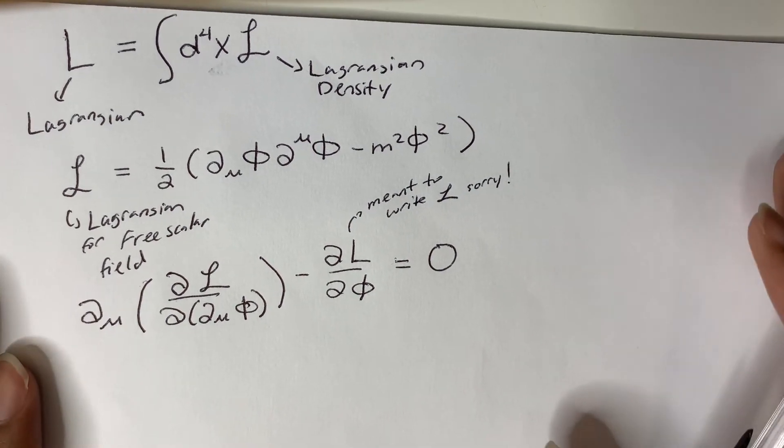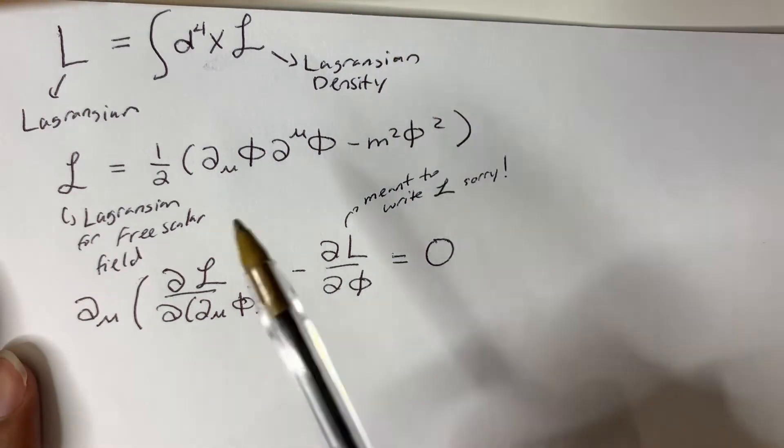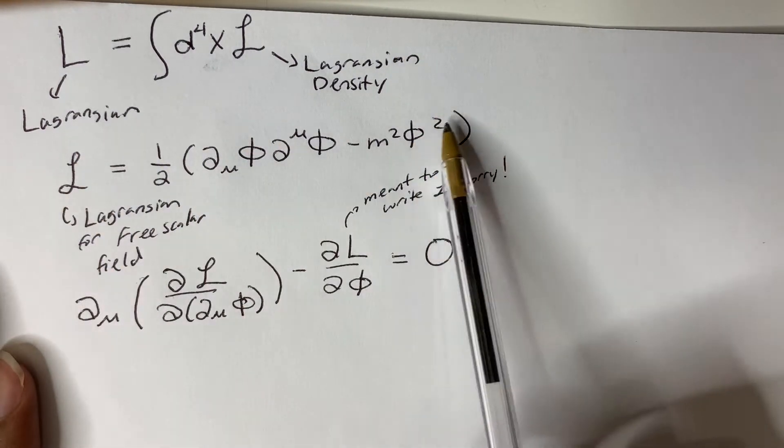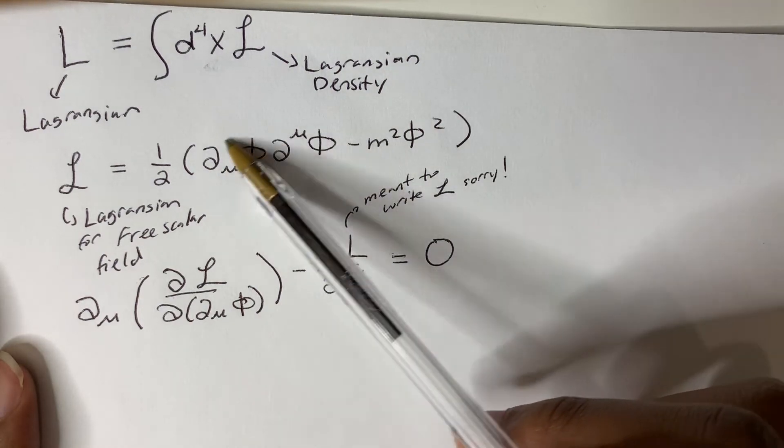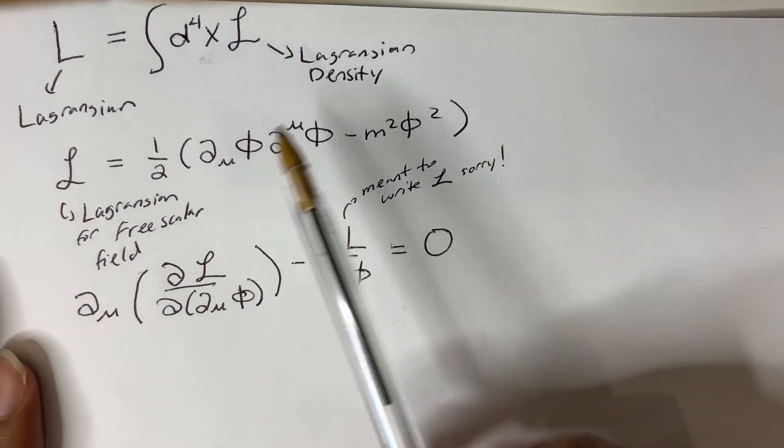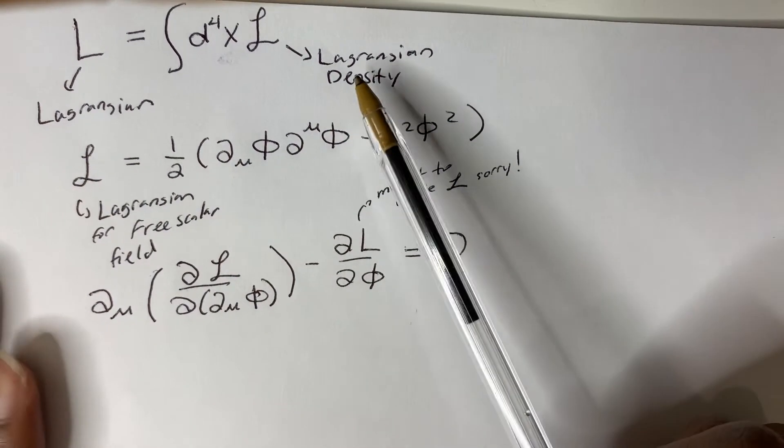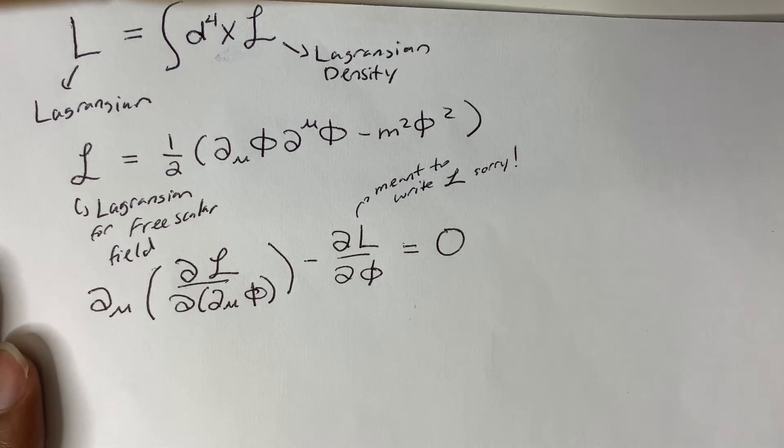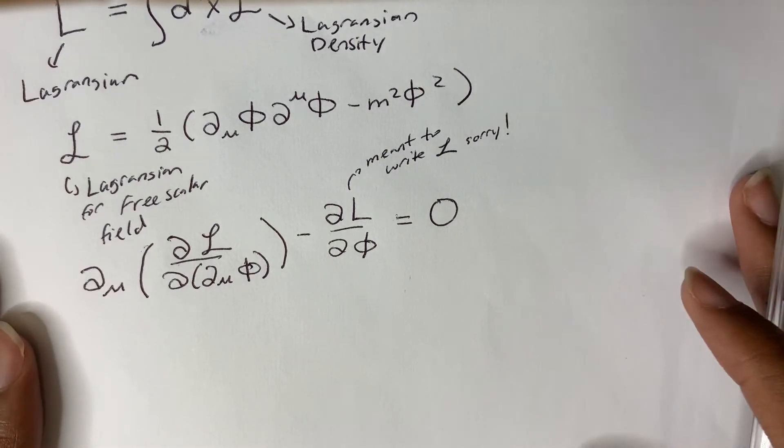So what we care about is really the Lagrangian density. And here is the Lagrangian density for a free scalar field. We usually call this the kinetic term, and we usually call this the mass term. We'd plug in the Lagrangian for a free scalar field into the Lagrangian equations, and that should churn out the Klein-Gordon equation. So let's start.